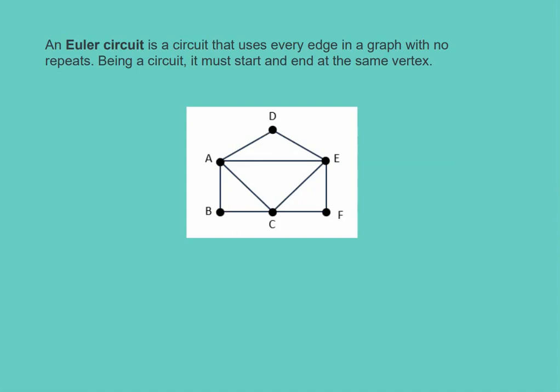An Euler circuit is a circuit that uses every edge in a graph with no repeats, but being a circuit, it must start and end at the same vertex. Let's find an Euler circuit. Starting at vertex D, we could go to A, then B, C, F, E, C, A. We can go back to the same vertex — we just can't trace over an edge we've already traveled. So that's one example of an Euler circuit: we started at vertex D and ended at vertex D.